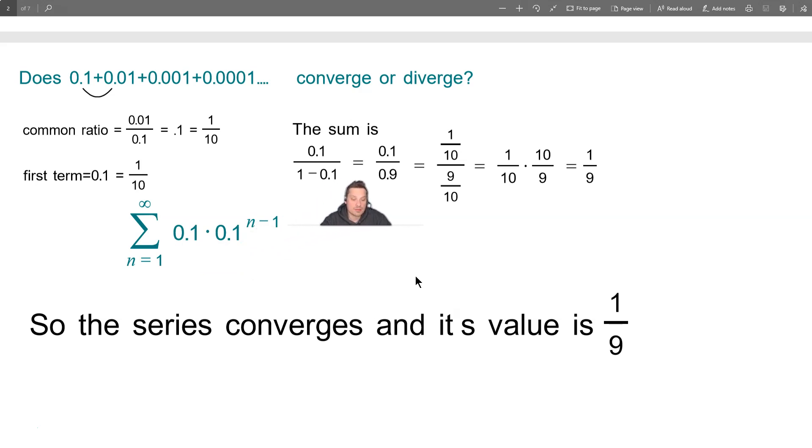You work this out. This is going to be 0.1 divided by 0.9. 0.1 is 1 tenth, 0.9 is 9 tenths. Then you have keep, change, flip. That's going to be 1 tenth times 10 over 9. The 10 from this fraction and this one will cancel off and it's going to give you 1 ninth.